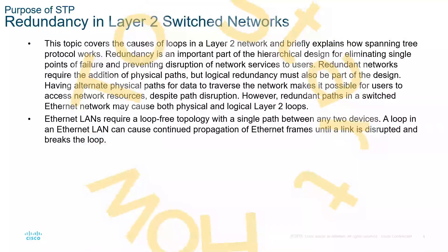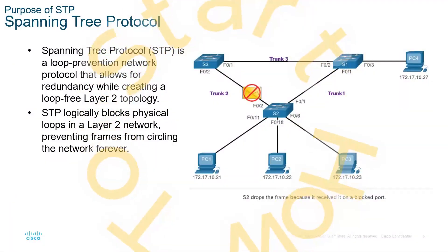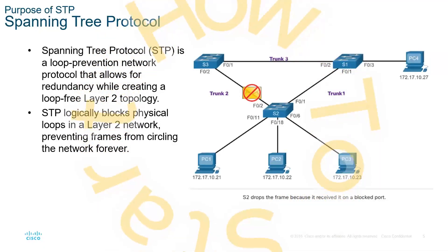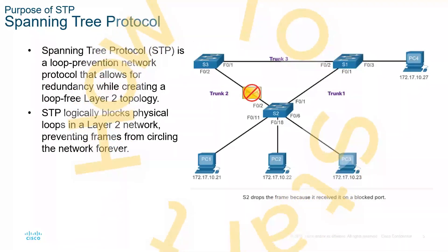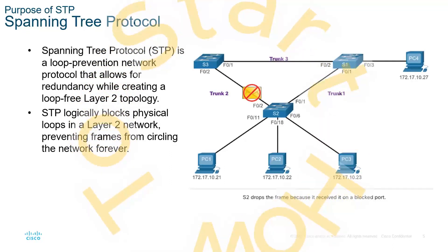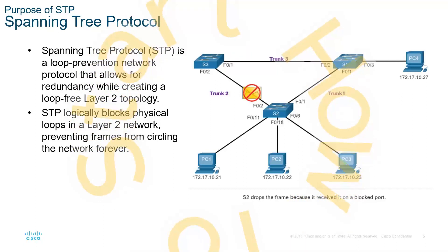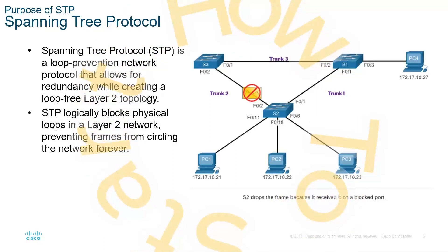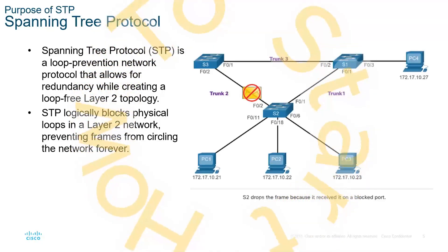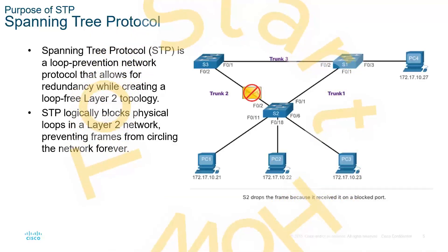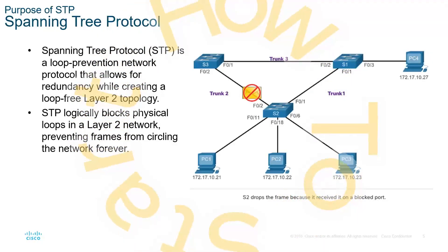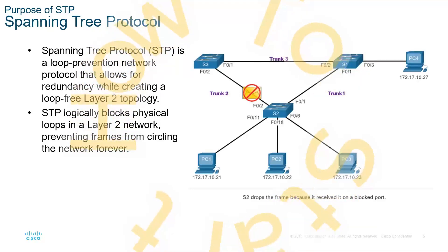STP breaks the loop logically. Here we have that circle — S1, S2, S3 — there is a physical loop. We have connections between S1 and S2, that's trunk 1; between S1 and S3 is trunk 3; and between S2 and S3 is trunk 2. This is a looped environment, so there has to be a way to prevent one of these trunks from turning on. That's the goal of STP — it will logically disable an interface to prevent this loop from occurring.